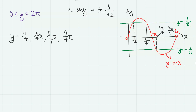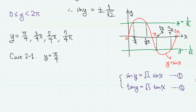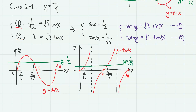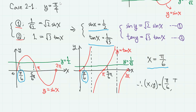Now let us find x for each case. First, when y equals π over 4, equations 1 and 2 become: sine(π/4), which is 1 over square root of 2, equals square root of 2 sine x; and tangent(π/4), which is 1, equals square root of 3 tangent x. So we have sine x equals 1/2 and tangent x equals 1 over square root of 3. We need both equations, since the root must satisfy both. From the graphs of sine and tangent, the value satisfying both equations is x equals π over 6. So we have the root (π/6, π/4).